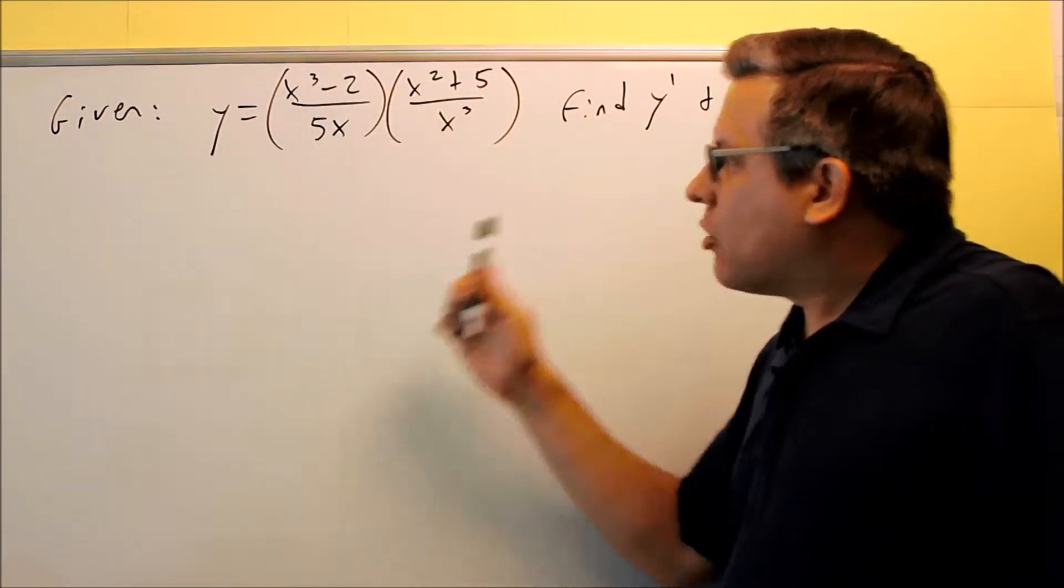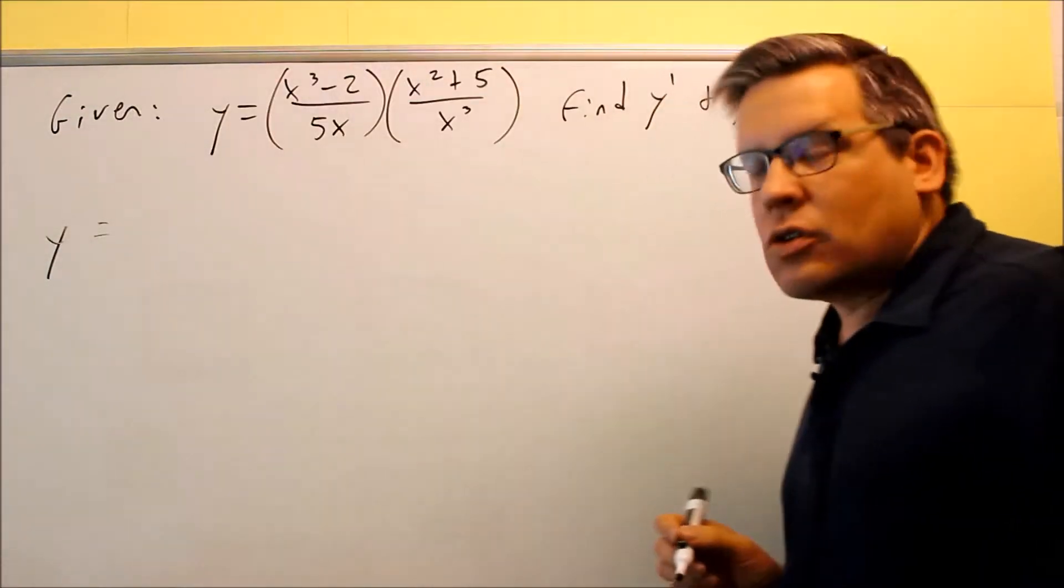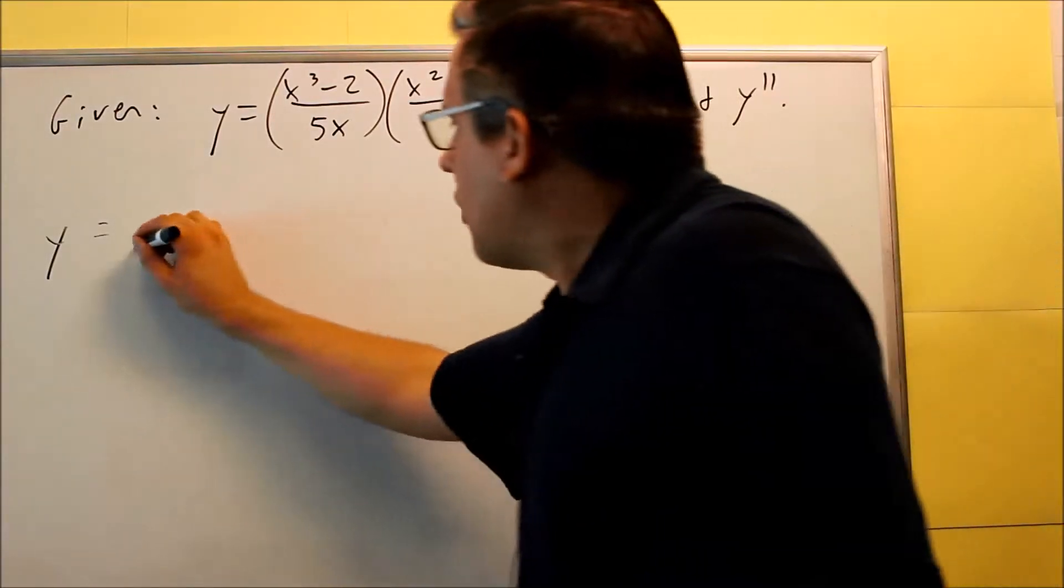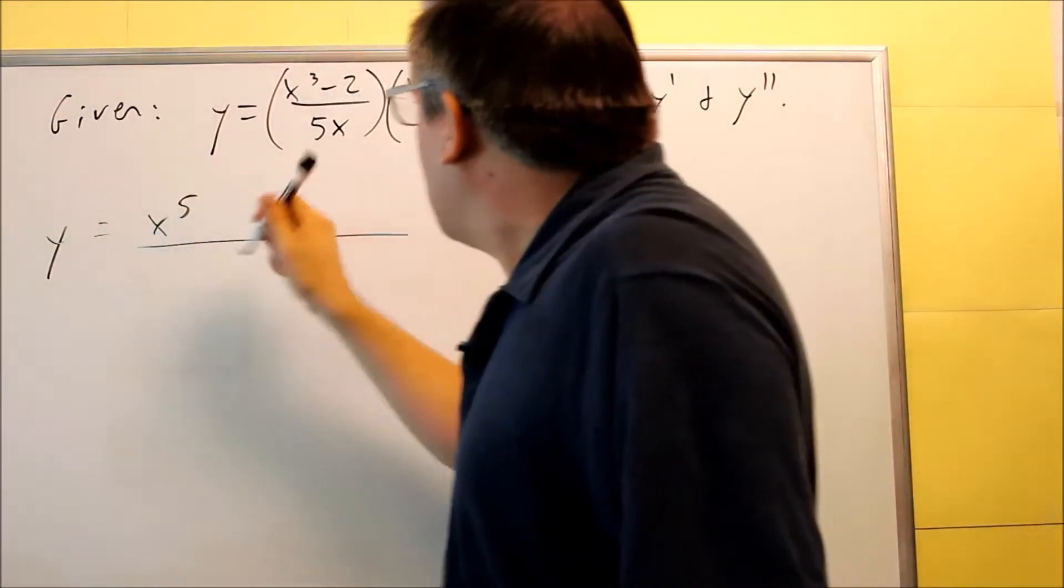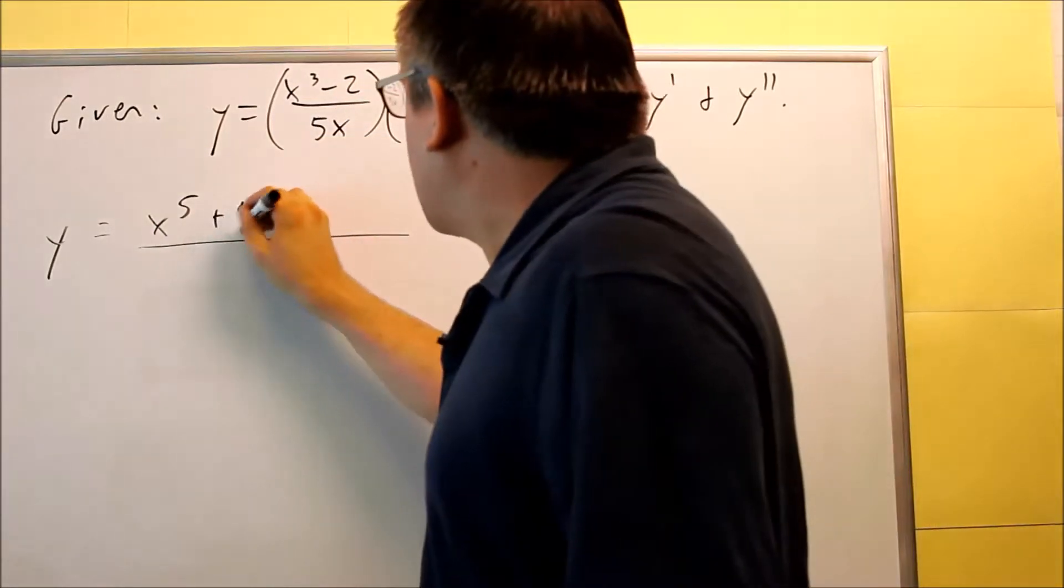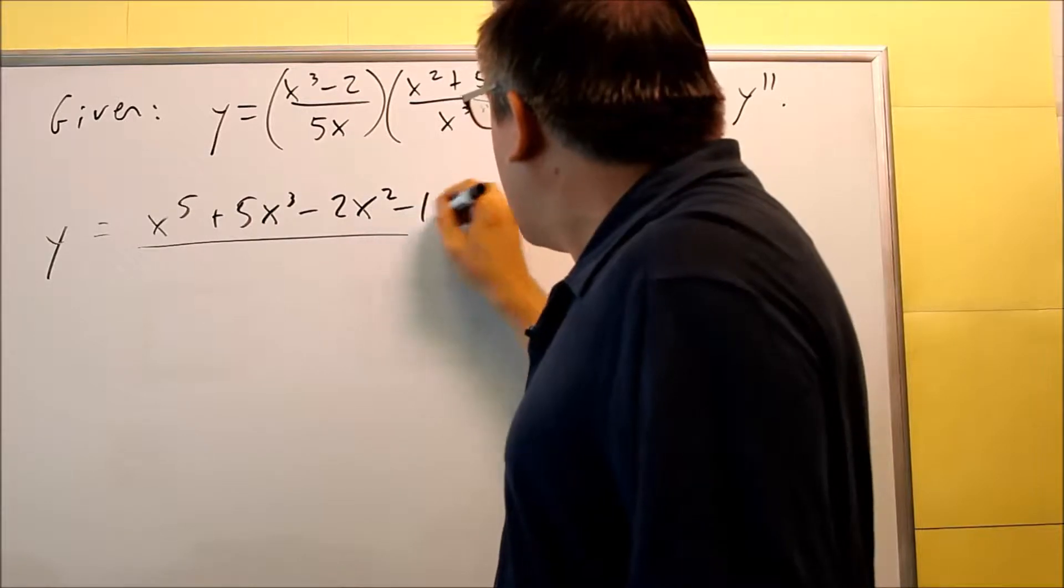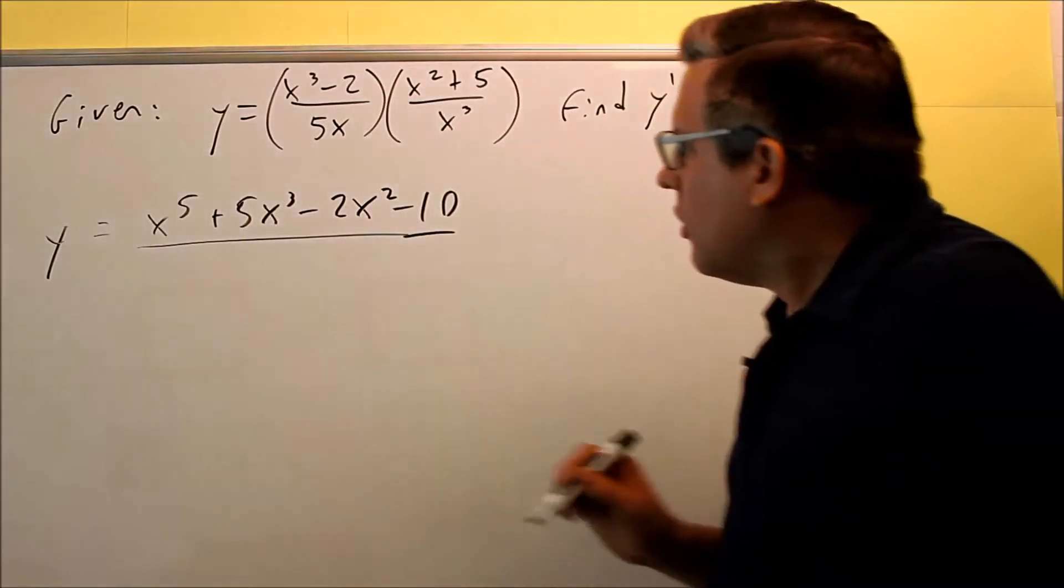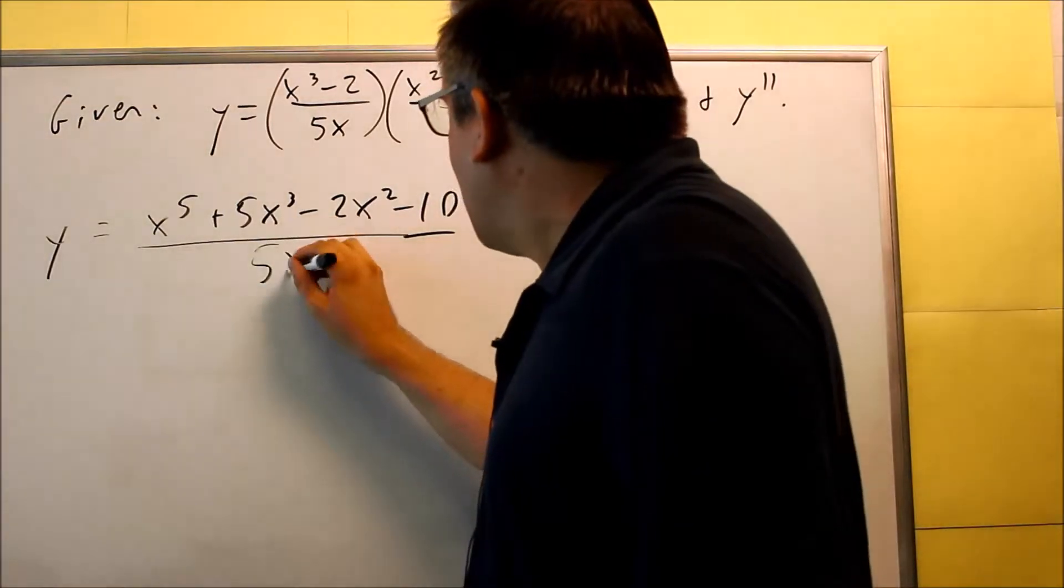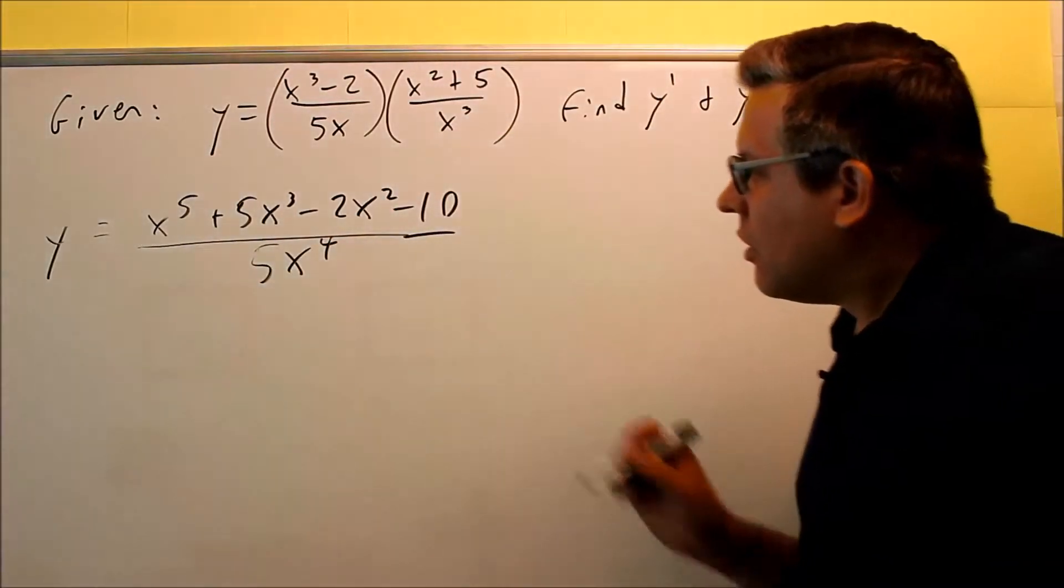Let's do that. Across the top, across the bottom, we're not doing any derivative yet, we're just doing some simplifying. Across the top, we're going to FOIL this. That's going to be x to the fifth, and then plus 5x to the third, and then minus 2x squared, and then minus 10. So we're distributing that all the way across using FOIL. On the bottom, I have 5x to the fourth power because you're adding exponents together.